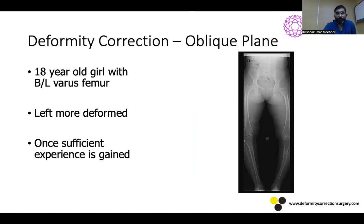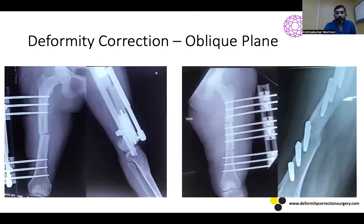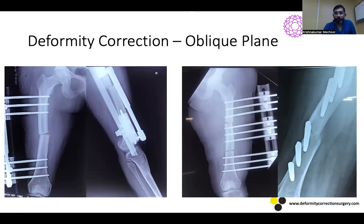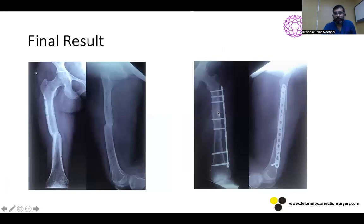For deformity correction in an oblique plane, an 18-year-old girl with bilateral varus femur — left more deformed, right less — was treated. These cases should only be attempted after gaining adequate experience with simpler cases. Pins in every clamp were placed in seats 1 and 5. On the right side, one osteotomy through the lesser trochanter was performed; on the left side, two osteotomies with three clamps were used. Percutaneous osteotomy with adequate drill holes is technically feasible. The left side developed a stress fracture at the proximal osteotomy site requiring a locking plate.